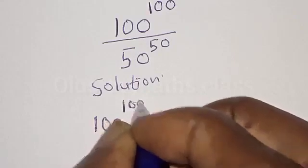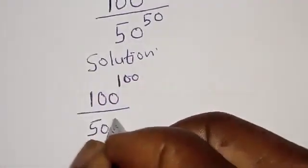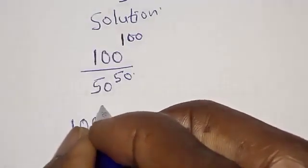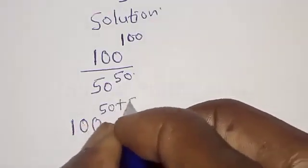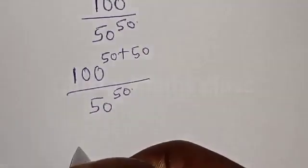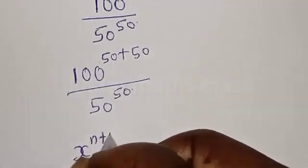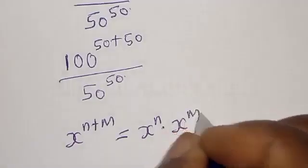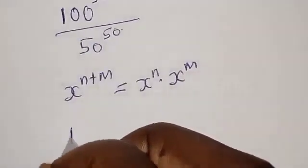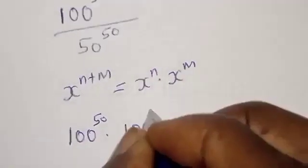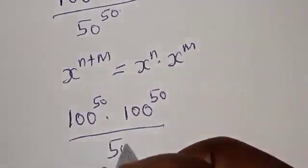Solution: we have 100 raised to power 100 over 50 raised to power 50. This can be expressed as 100 raised to power 50 plus 50, over 50 raised to power 50. Recall that if you have s raised to power n plus m, that is the same thing as s raised to power n multiplied by s raised to power m.